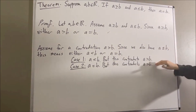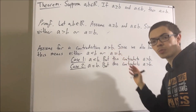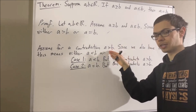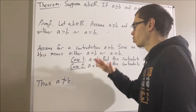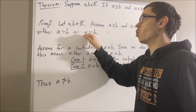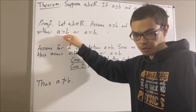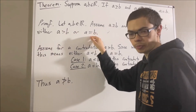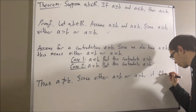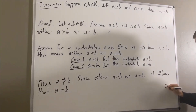So in either case, we reach a contradiction. Our assumption that A is greater than B led us to a contradiction, so we must instead have that A is not greater than B. We know that either A is greater than B or A is equal to B, but we have eliminated the possibility that A is greater than B. So we must have that A is equal to B, and that is exactly what we wanted to prove. So this completes the proof.